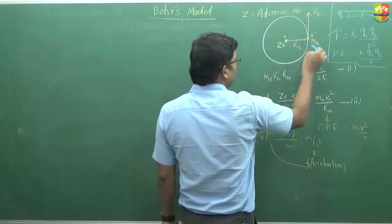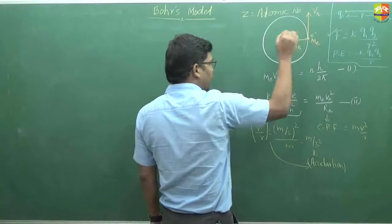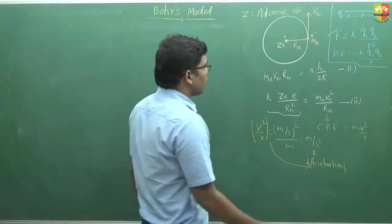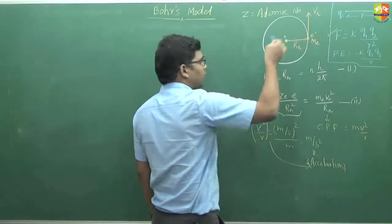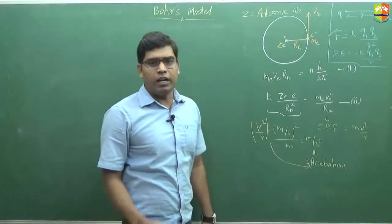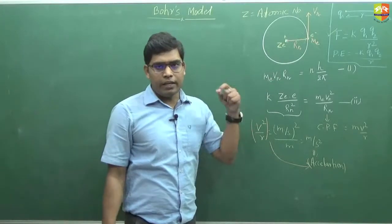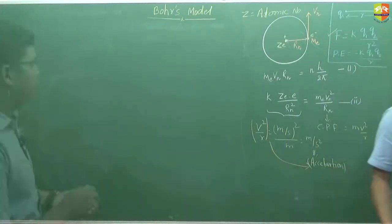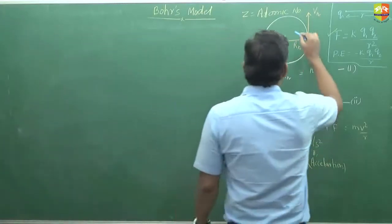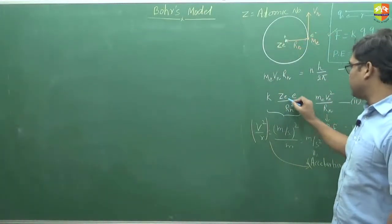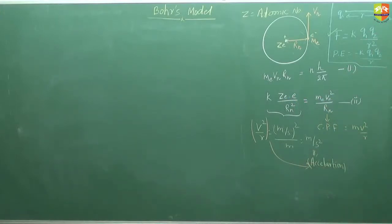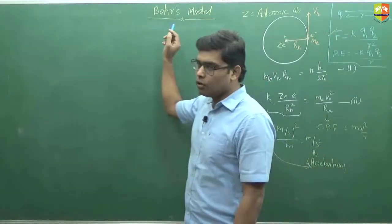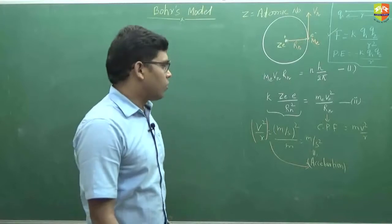Since there are different types of electrostatic forces acting in all directions, it is very difficult to calculate the net force. That is why this model is true only for one electron system. All these net forces we have to calculate, and that net force should equal the centripetal force. The calculation is very difficult and complex, and that is why Bohr's model is valid only for one electron system — the system which has only one electron.